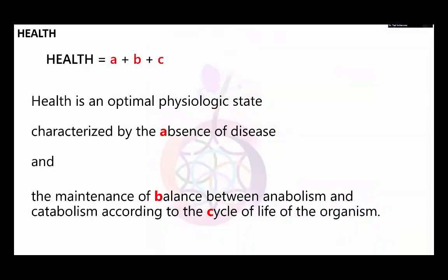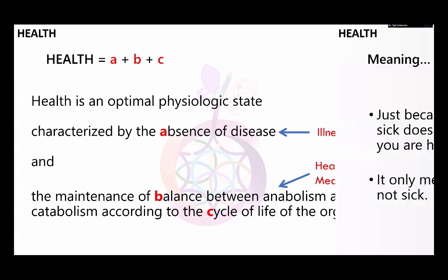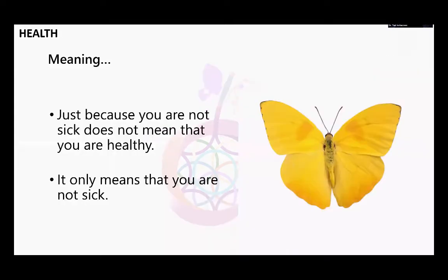Take away this definition for yourselves: Health equals A plus B plus C. Health A is the absence of disease, and is the purview of illness medicine. B is the balance between anabolism and catabolism according to the cycle of life of the organism — our summer and winter balance in the cell danger response. That's where we practice health optimization medicine and practice. Just because you're not sick doesn't mean that you're healthy. It only means that you're not sick.